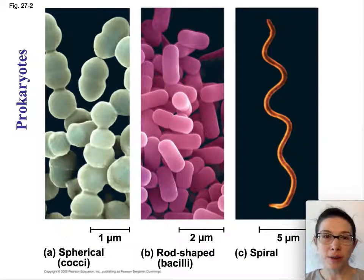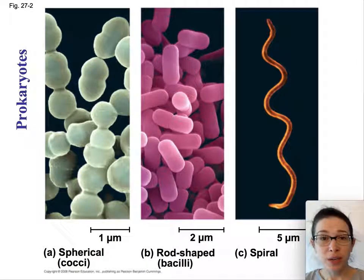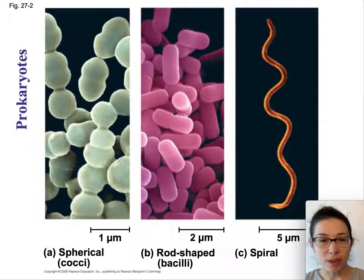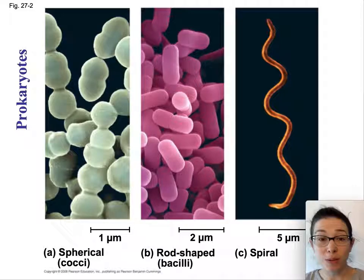Welcome back. We talked about viruses in the last video and we're going to talk about bacteria now. Here are some photos of bacteria. Some are round and have spherical shapes, some have rod shapes, some have spiral shapes.